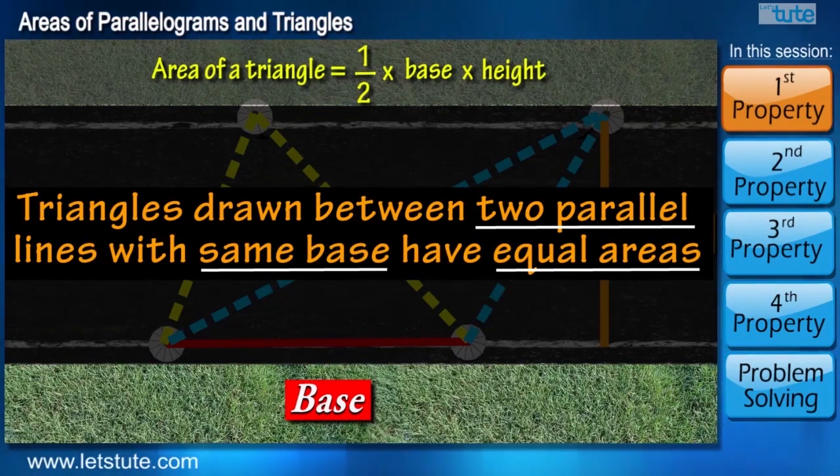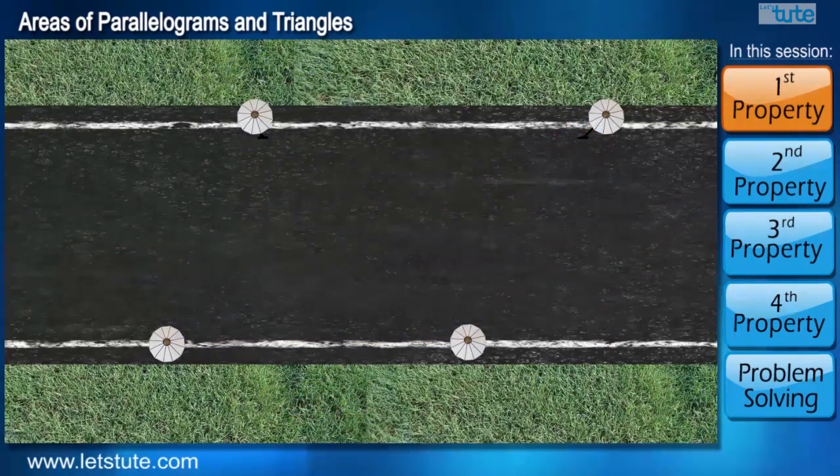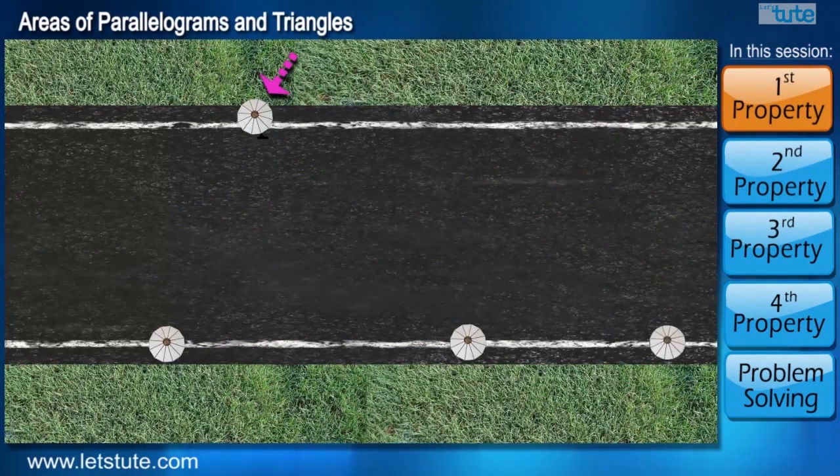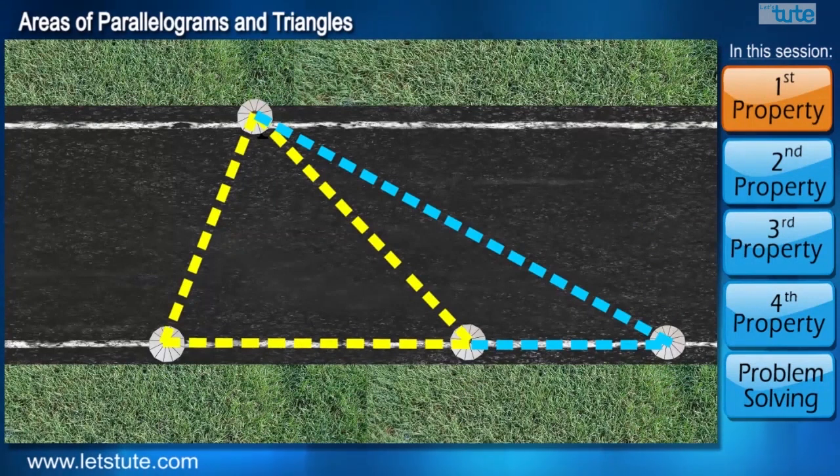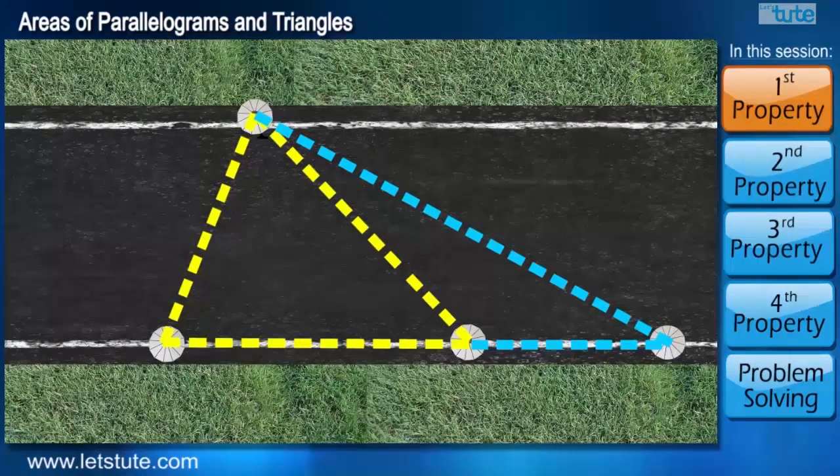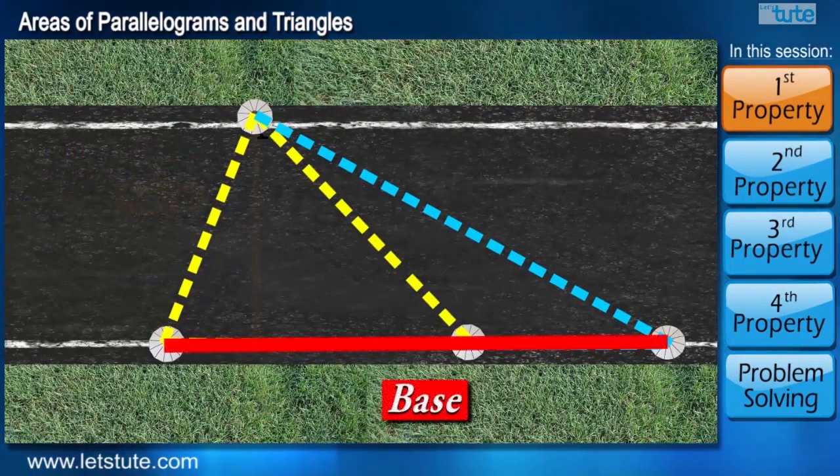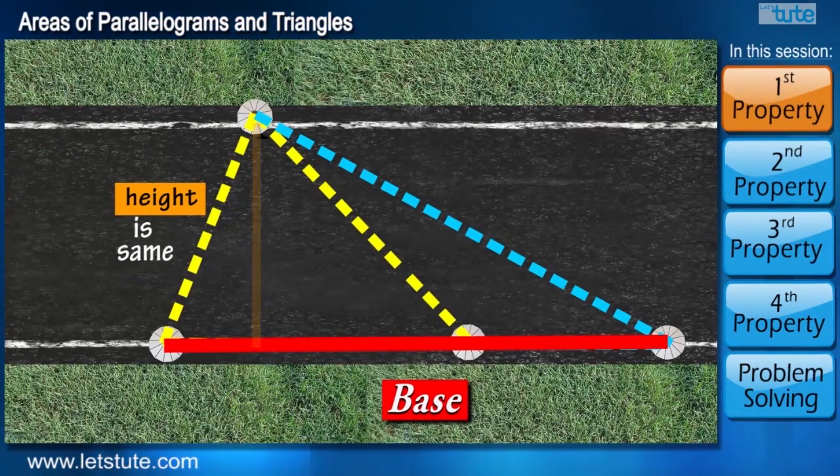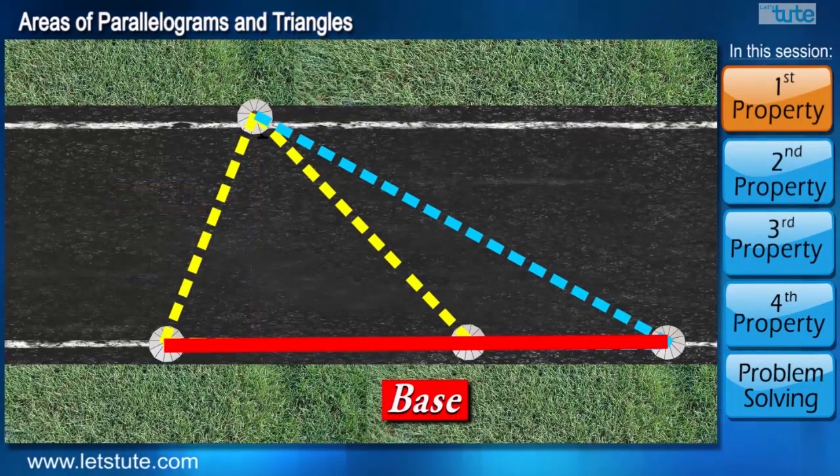Let's try some other combination of triangles and see what we can learn through it. Now consider one light pole on one side and three light poles on the other side of the road. Again we have two triangles. Can you tell me what is common in both of these triangles in terms of base and height? We can see the height of both triangles is same because they lie between the same parallel lines. But what can we say about the base?